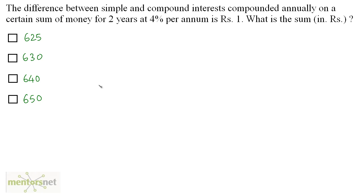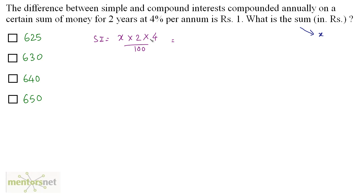The difference between simple and compound interest compounded annually on a certain sum of money for 2 years at 4% per annum is Rs.1. What is the sum in Rs? Let the sum be X, which is the principal. Simple interest equals PNR upon 100, that is X into 2 into 4 by 100, which equals 8 by 100 X. Now let us calculate the compound interest. Amount equals X into 1 plus 4 upon 100 raised to 2.